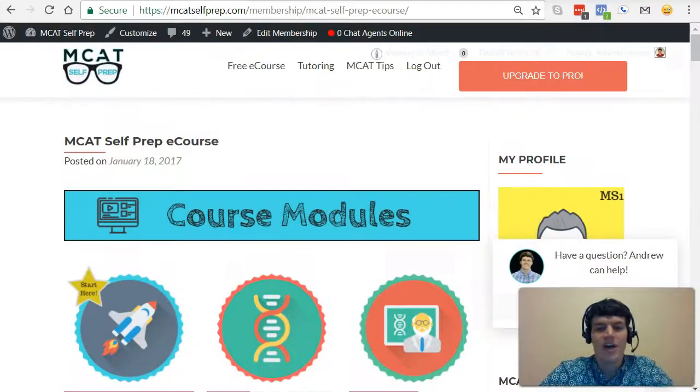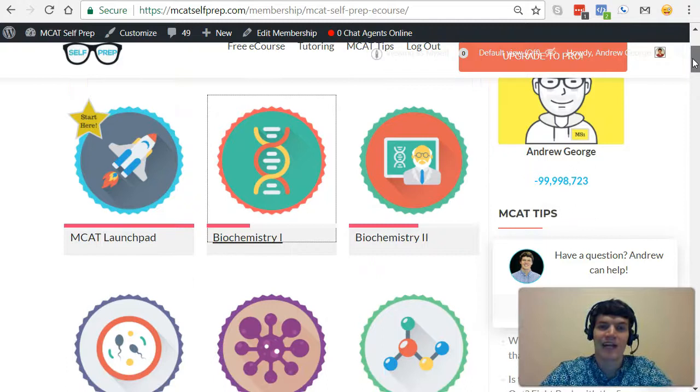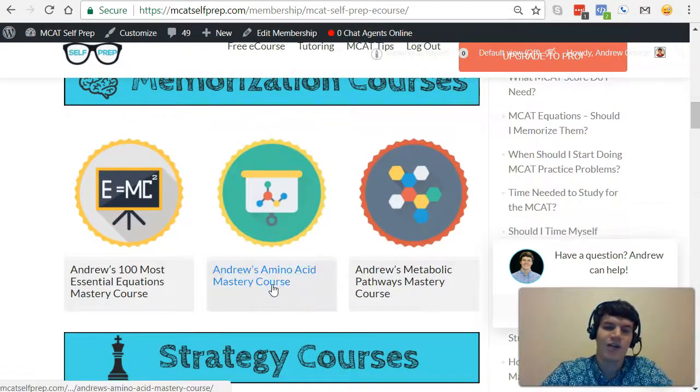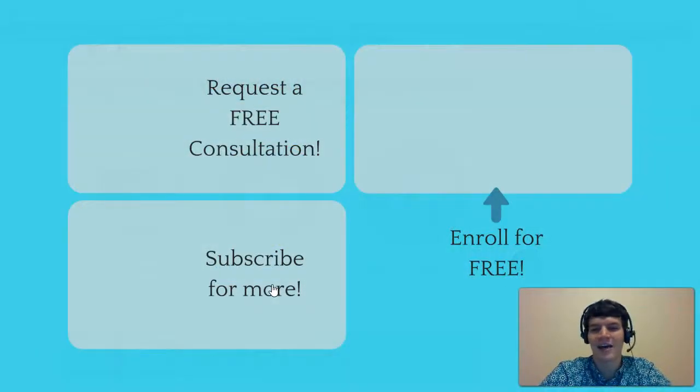Like I said earlier, knowing the amino acids in and out is especially crucial for the MCAT, which is why I created my amino acids mastery course found at MCATselfprep.com. My amino acids mastery course will walk you through everything you need to know about amino acids for the MCAT, teaching you how to quickly memorize the one-letter, three-letter abbreviations, structures, and key properties of amino acids that you just really have to know for the MCAT.